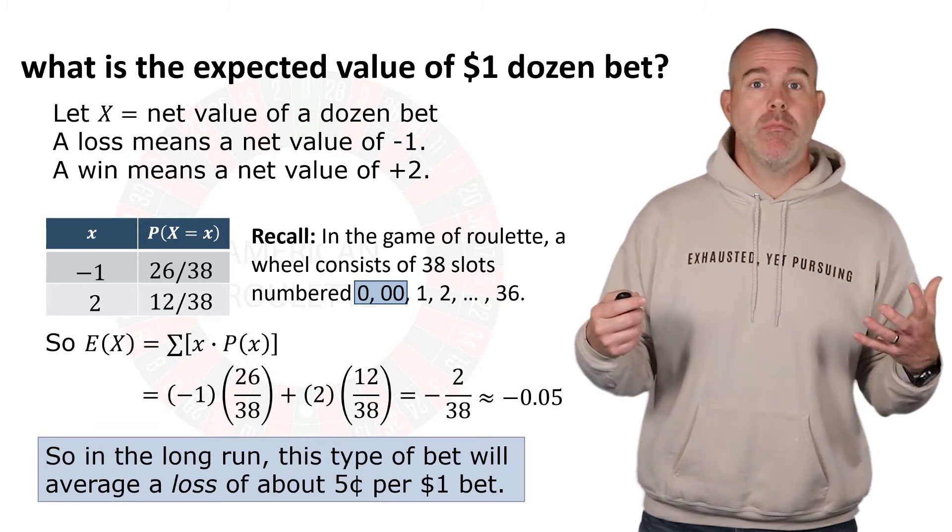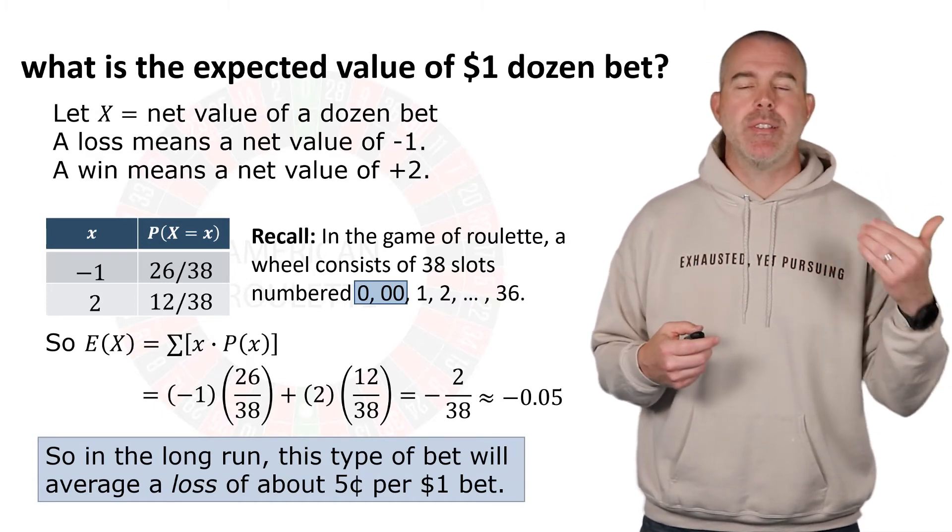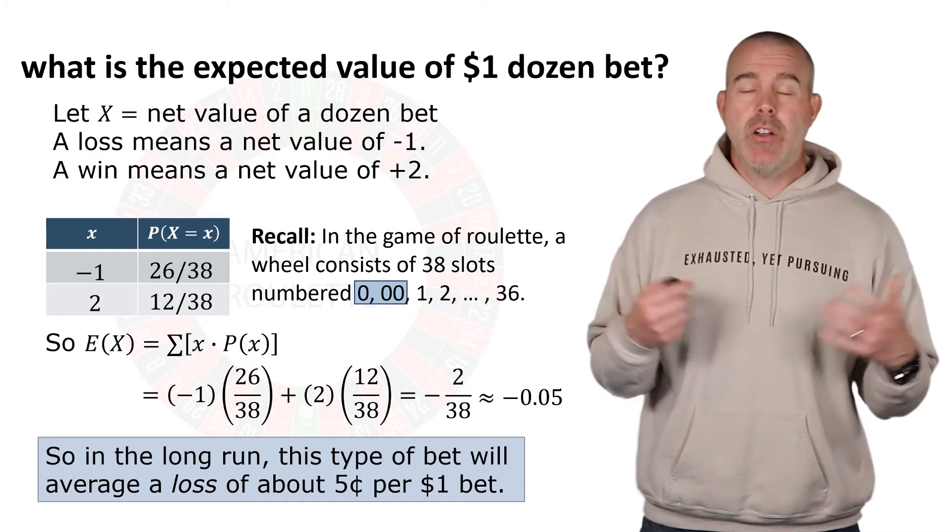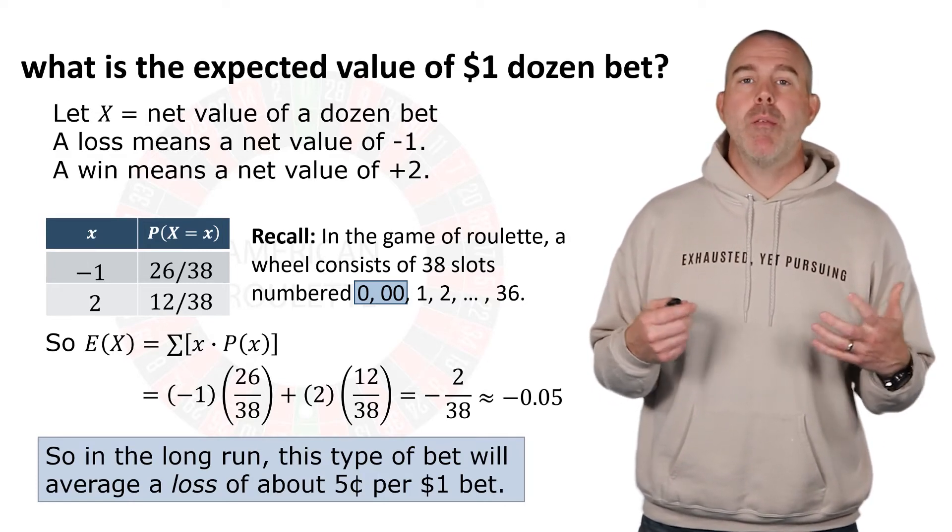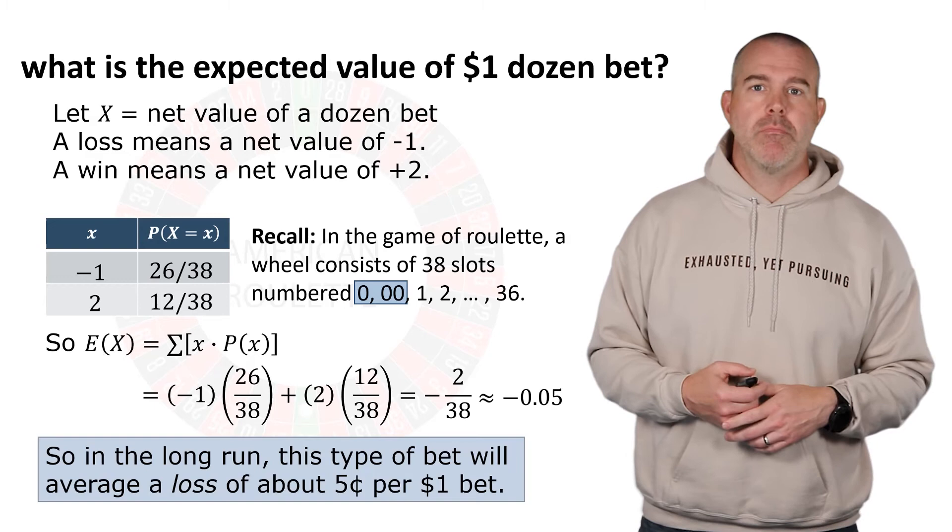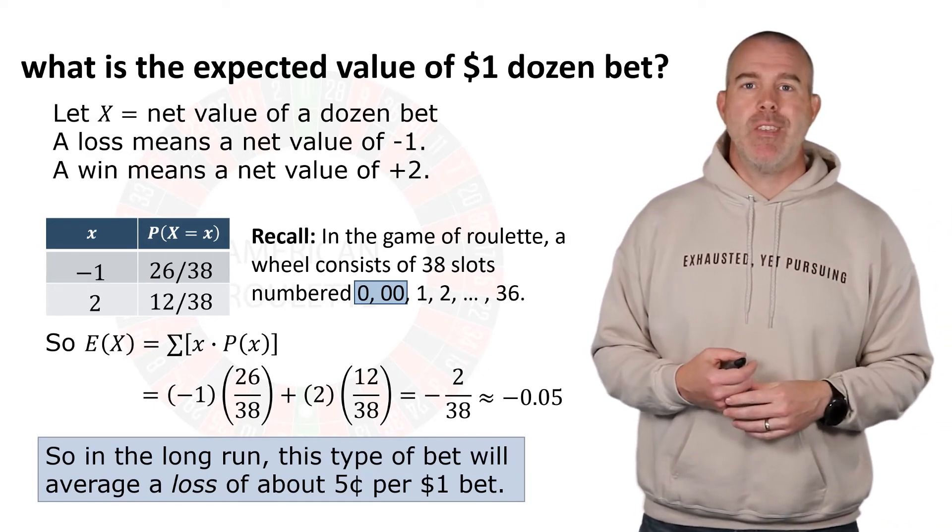Now, sometimes you'll win, sometimes you'll lose. On average, in the long run, you're going to lose five cents. So if you play 100 times, you might win some, you might lose some, you're probably going to be out five dollars. Okay, it's a long-term average. That's what this expected value means.